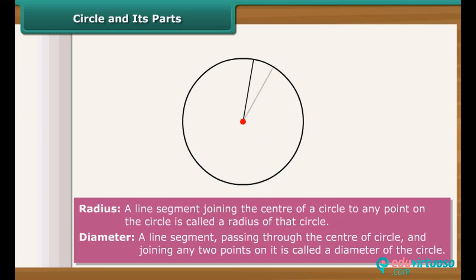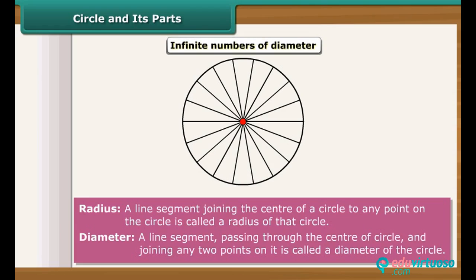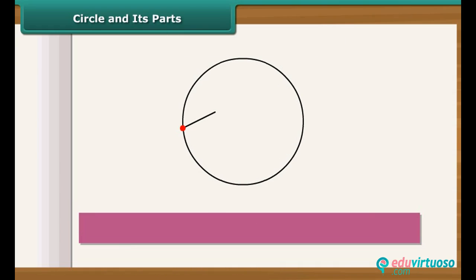There can be infinite number of radius for a given circle. Similarly, there are infinite numbers of diameter for a circle. The line connecting two points on circle is called chord.